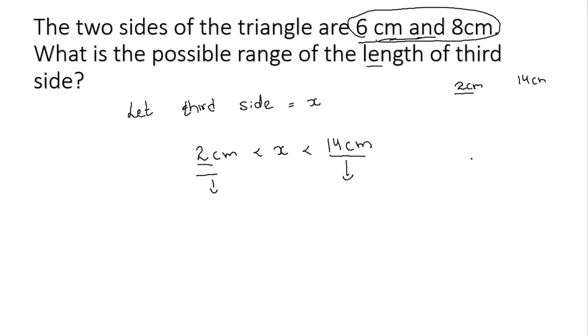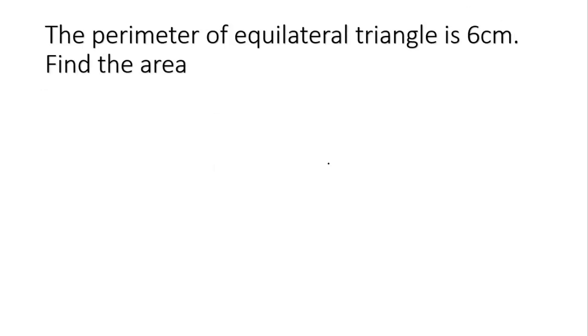Whenever we have a triangle, the third side is greater than the difference of the lengths of the other two sides and smaller than the sum of the lengths of the other two sides. So the possible range of the length of the third side is: it will be greater than 2 cm and less than 14 cm. Next question: the perimeter of an equilateral triangle is 6 cm, find the area.